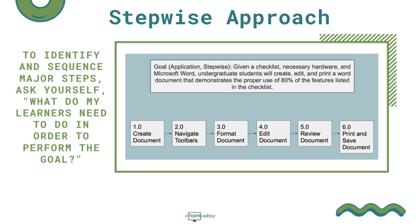To identify and sequence major steps, ask yourself what learners need to do in order to perform the goal. Your goal statement may already include a short description of the major steps. Each step may represent a physical activity or a mental step, and the description of each step should include a measurable verb. These steps will be helpful in determining the learning objectives for the e-learning course as well. A goal analysis results in a flow diagram or visual display that clearly identifies and illustrates the relationship among the major steps.